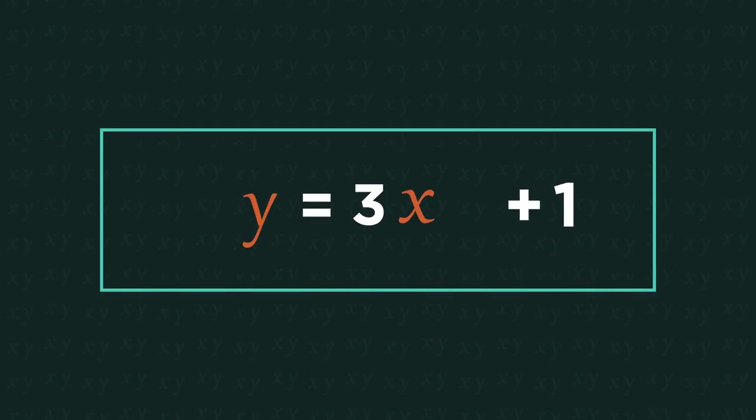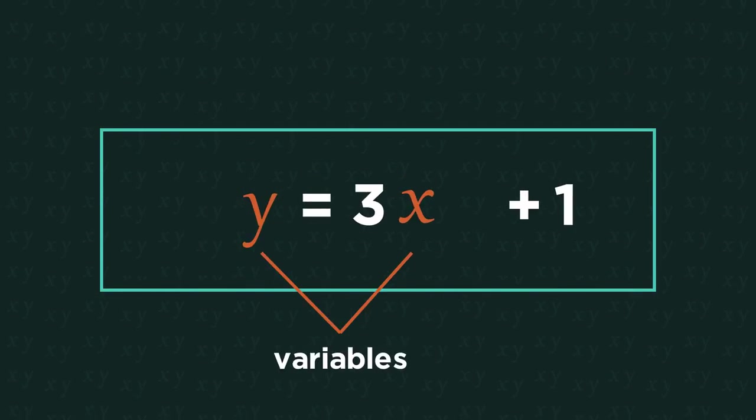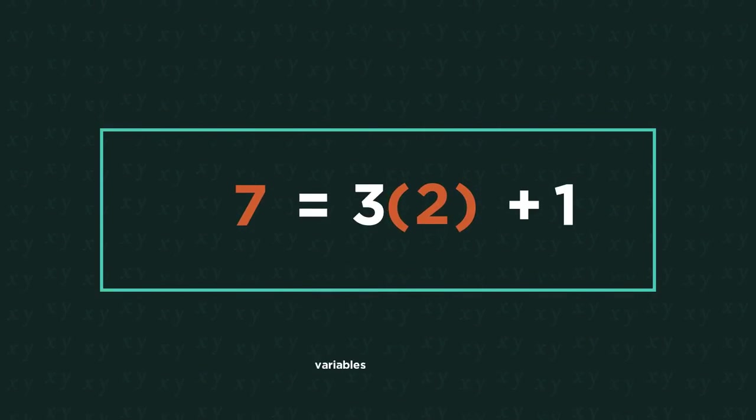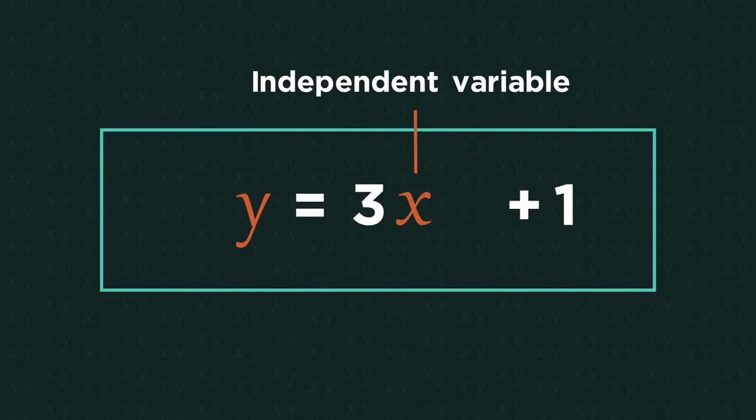The x and the y are both known as variables because they aren't set values. They vary. Even more specifically we call the x the independent variable, because we can choose any value of x randomly or independently.